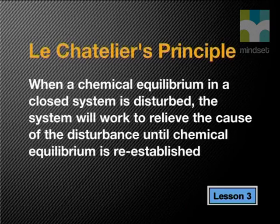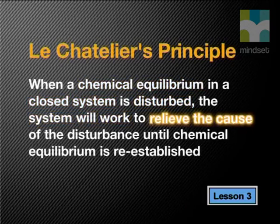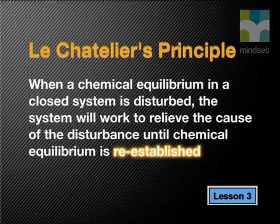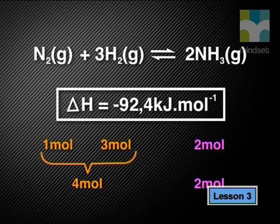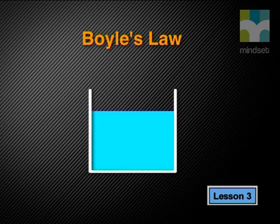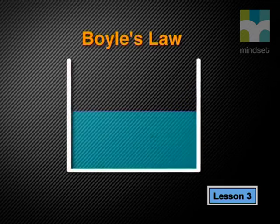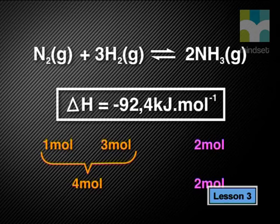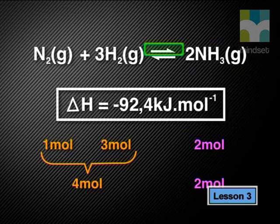Remember, Le Chatelier's principle states that when a chemical equilibrium in a closed system is disturbed, the system will work to relieve the cause of the disturbance until chemical equilibrium is re-established. Notice from the equation that there are 4 moles of reactants and 2 moles of products. When we increase the pressure of gases in chemical equilibrium, we create a stress on the system. To relieve this stress, the reaction that produces fewer moles of gas is favored. In this reaction, the forward reaction is favored and more ammonia is produced.